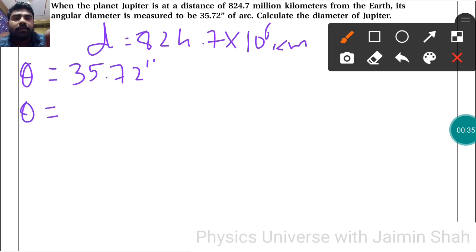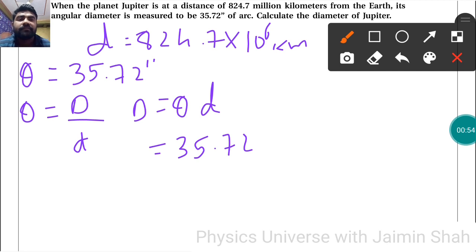the formula we have: θ = D/d, where capital D is the diameter of Jupiter that we need to find. So D = θ × d. Now, θ is equal to 35.72, and first of all it is in seconds.